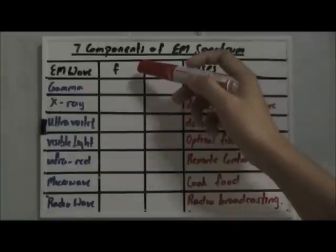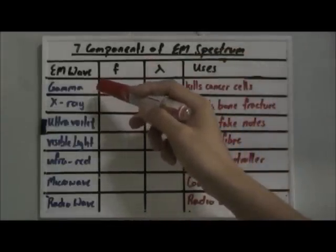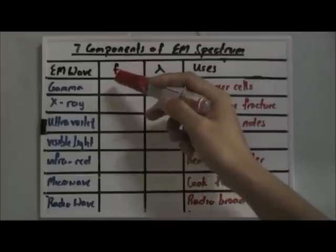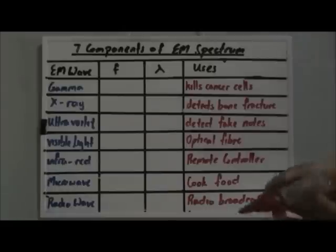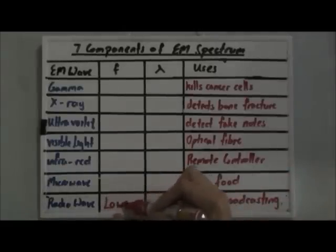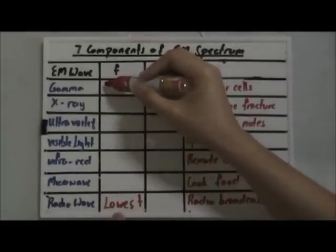As we move on to the frequency, I always remember that the gamma ray is dangerous. It can kill our human cells, and the radio waves is actually quite harmless because there's radio waves all around us. So for frequency, it is the lowest for radio waves, and for gamma ray, it is the highest.